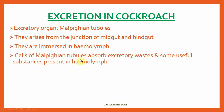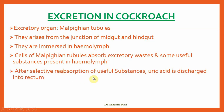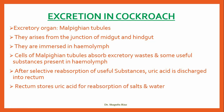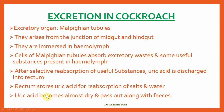The cells of Malpighian tubules absorb excretory waste and some useful substances present in the hemolymph. After selective reabsorption of useful substances, the excretory product — uric acid — is discharged into the rectum, part of the alimentary canal. In the rectum, uric acid is stored temporarily for reabsorption of salts and water. The rest of the uric acid, which becomes almost dry, passes out along with the feces from the body of the cockroach.